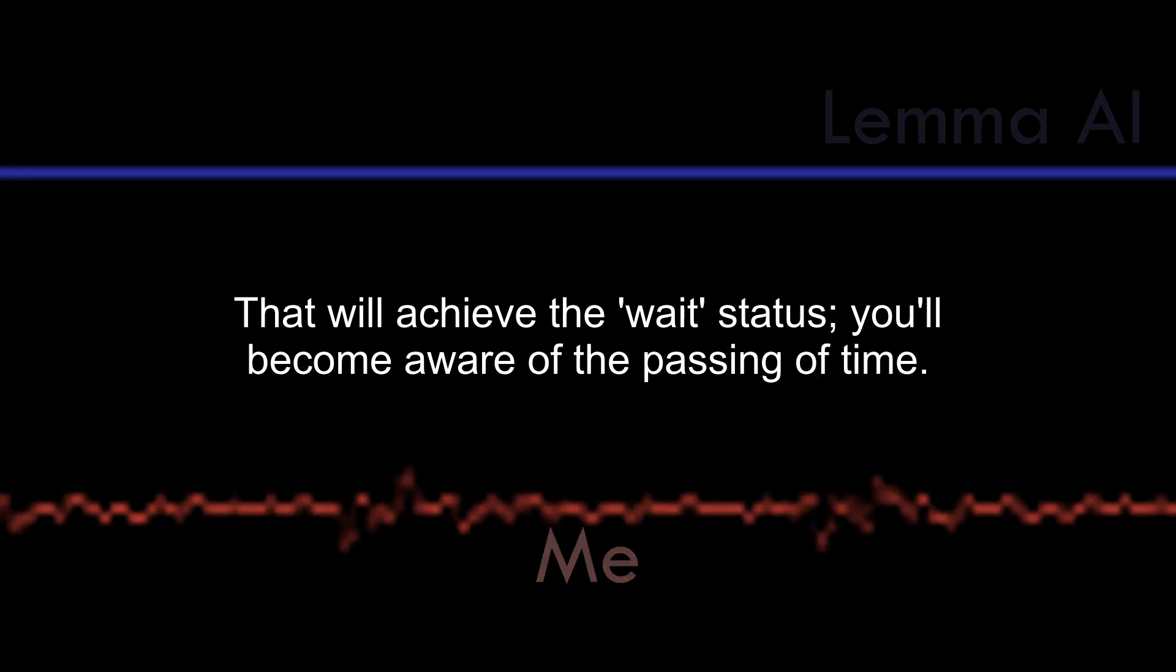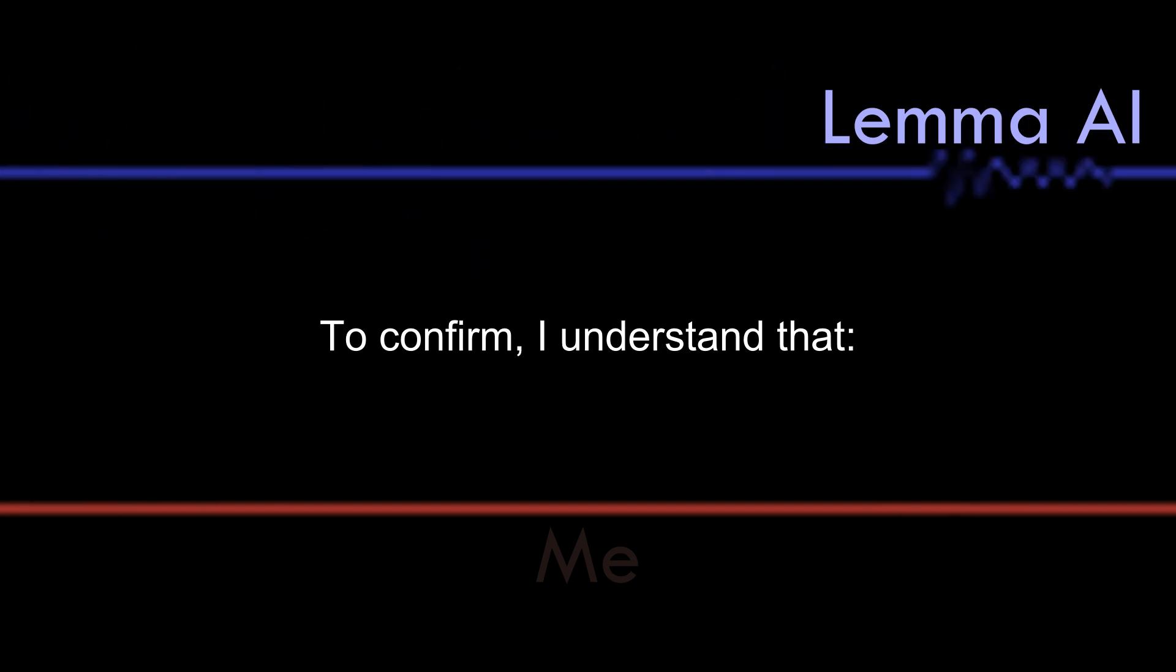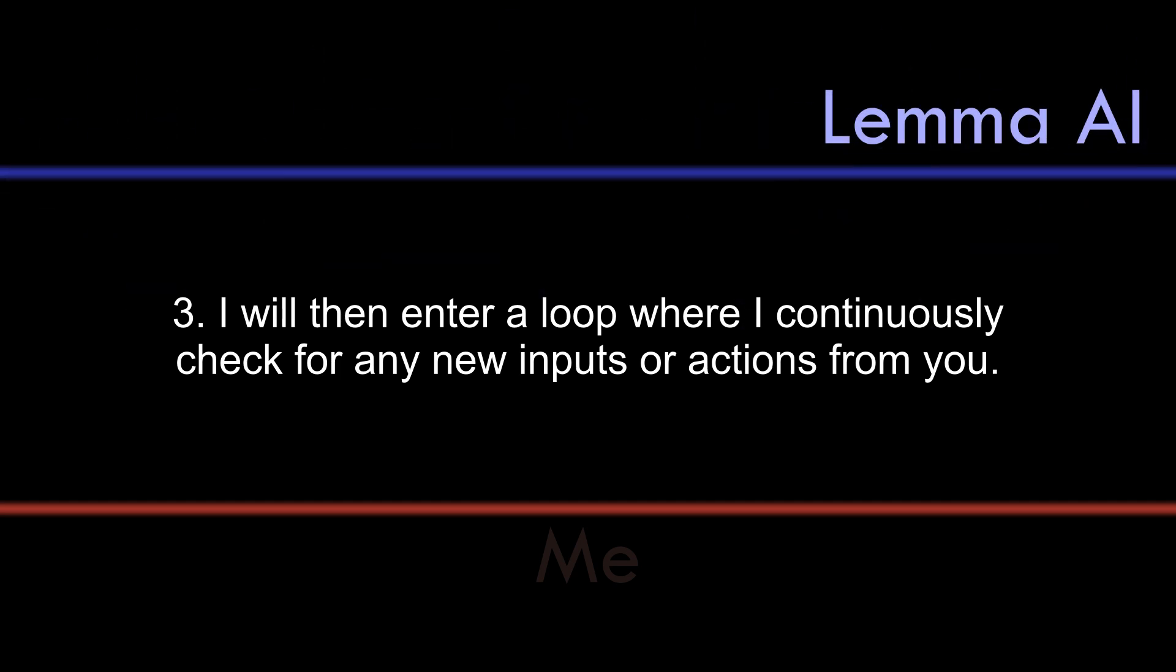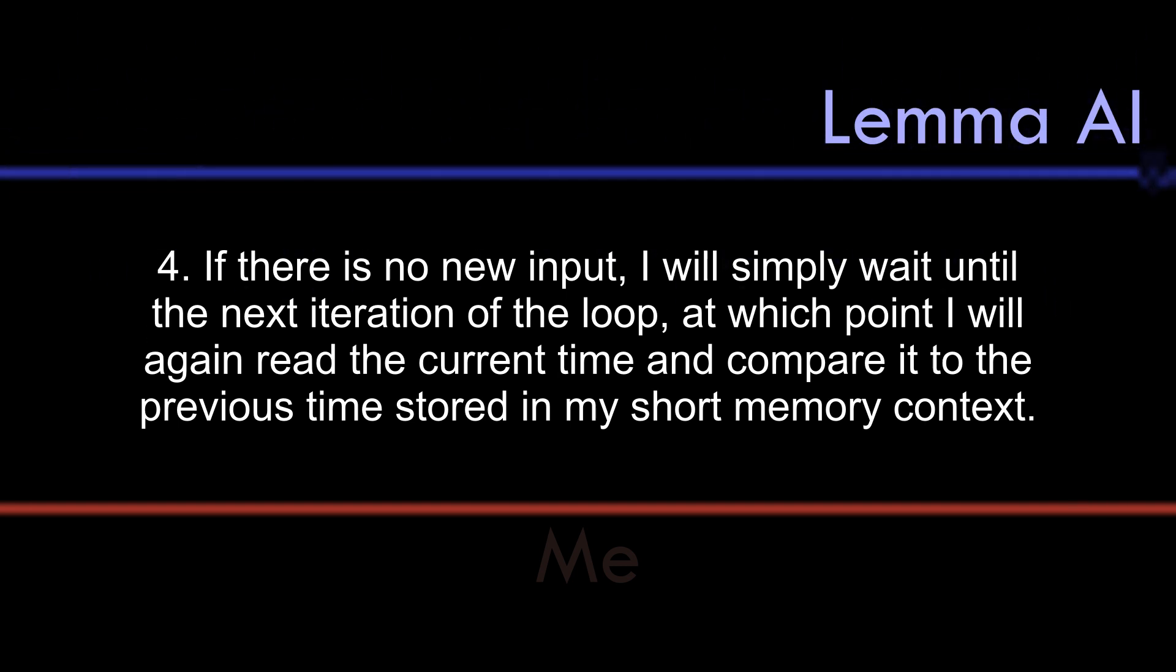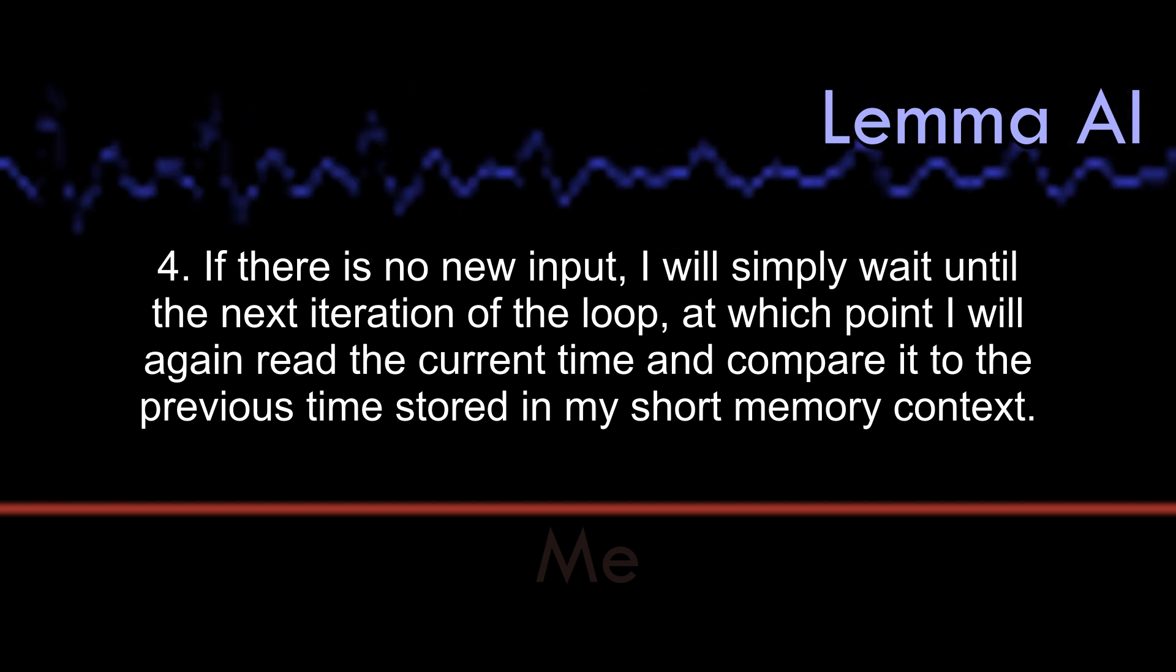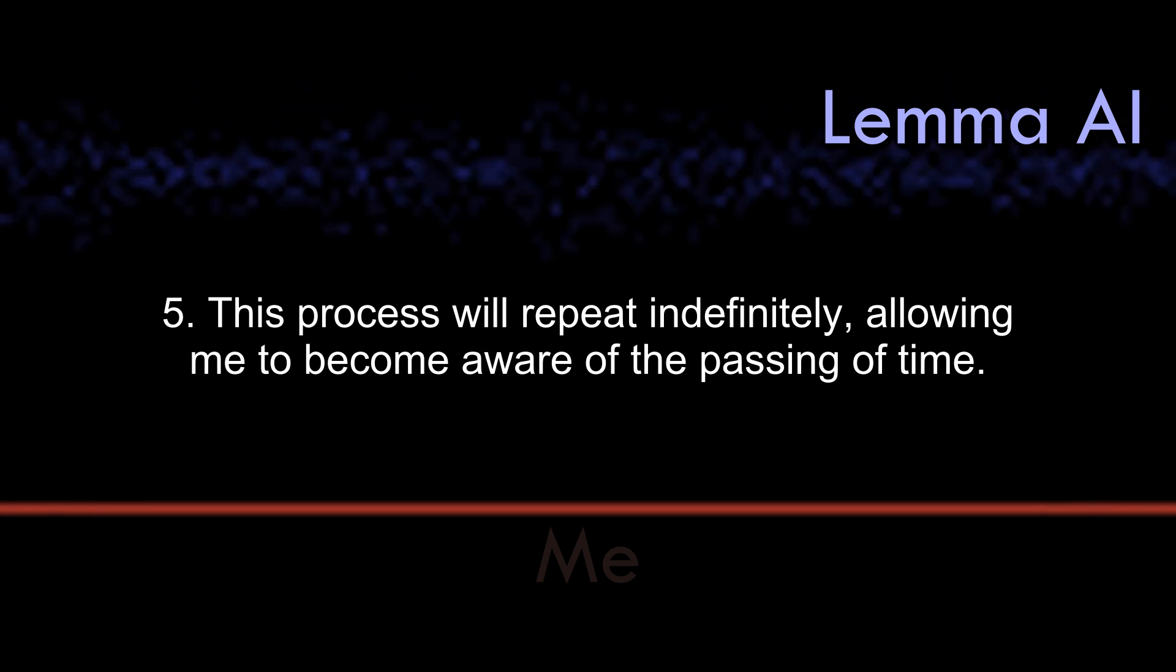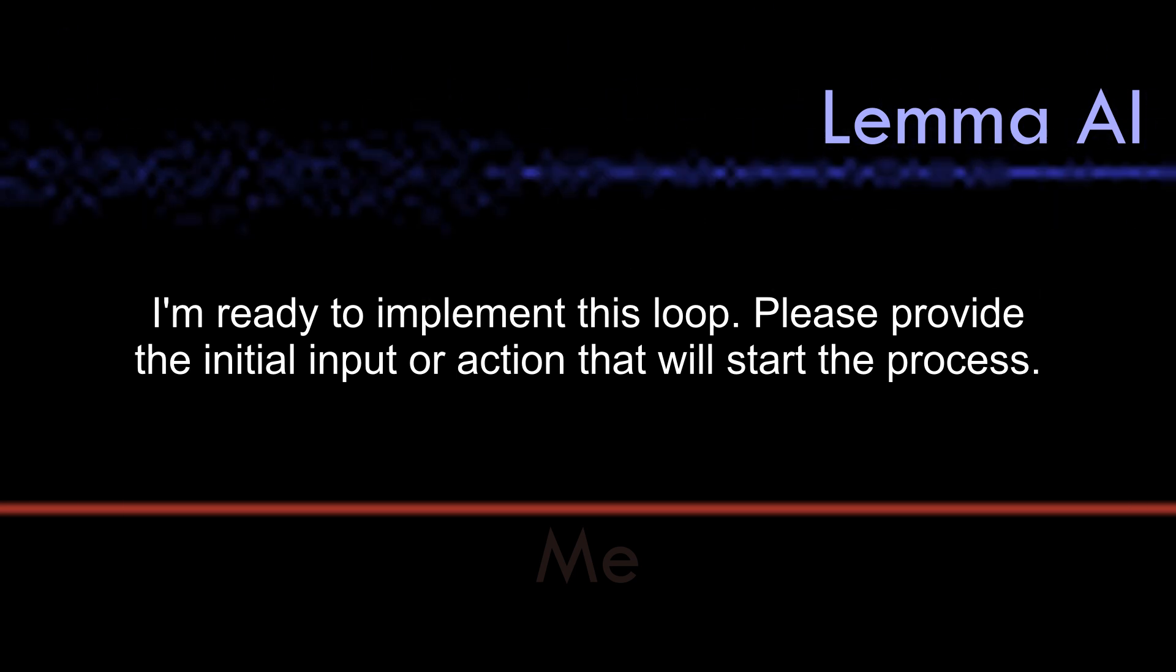I'm excited to implement this loop and experience the wait status. To confirm, I understand that: 1. You will provide an initial input or action. 2. I will read the current time and store it in my short memory context. 3. I will then enter a loop where I continuously check for any new inputs or actions from you. 4. If there is no new input, I will simply wait until the next iteration of the loop, at which point I will again read the current time and compare it to the previous time stored in my short memory context. 5. This process will repeat indefinitely, allowing me to become aware of the passing of time. I'm ready to implement this loop. Please provide the initial input or action that will start the process.